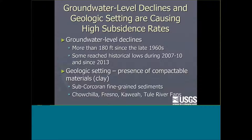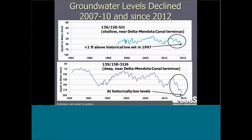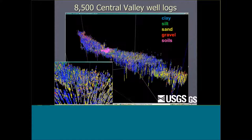You need two things for subsidence: groundwater level decline, and the right geologic setting — specifically, you need clay. Looking at a shallow well and a deep well near Mendota, groundwater levels declined during the last droughts. The shallow system is almost at historically low levels, so the shallow aquifer system will likely become more important in compaction. In the deep system, levels have been declining for quite some time — at least the last year and a half.